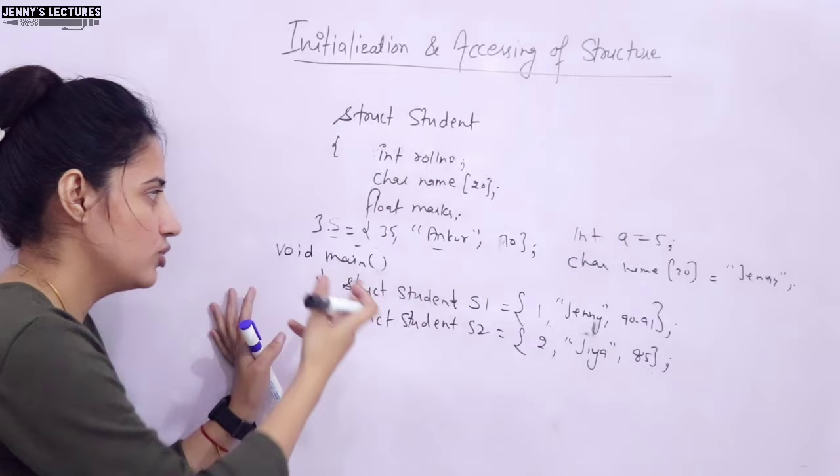In memory, s1 has space for roll number, name, and marks — and so does s2. For s1, roll number is 1, but if name and marks were not initialized they will hold null and 0 respectively. For s2, if roll number is 2, name is 'Jia', and marks is 85, you print them as: printf("%d %s %f", s2.roll_number, s2.name, s2.marks) — it will print '2 Jia 85.000000'.